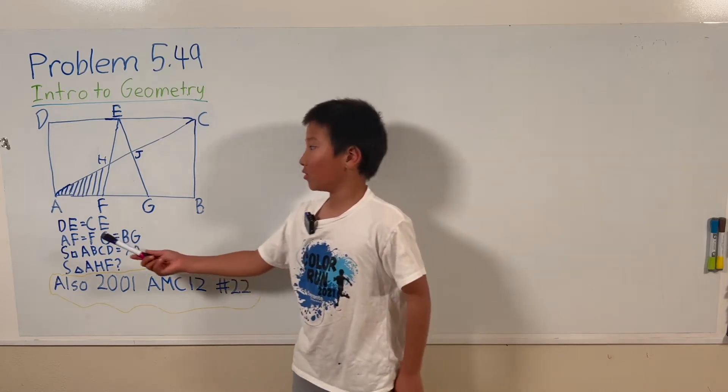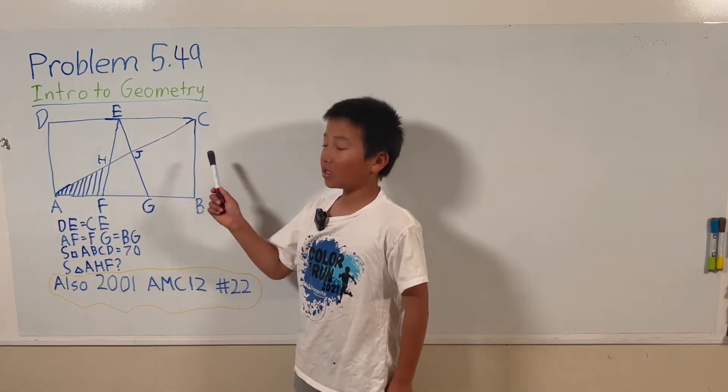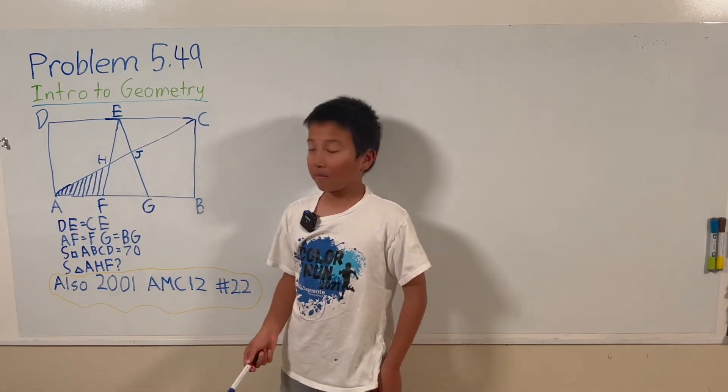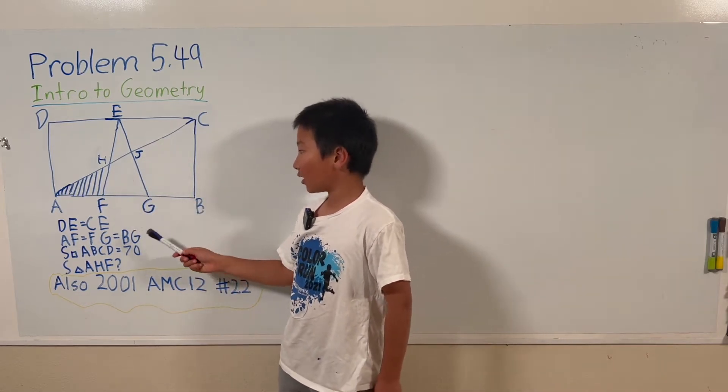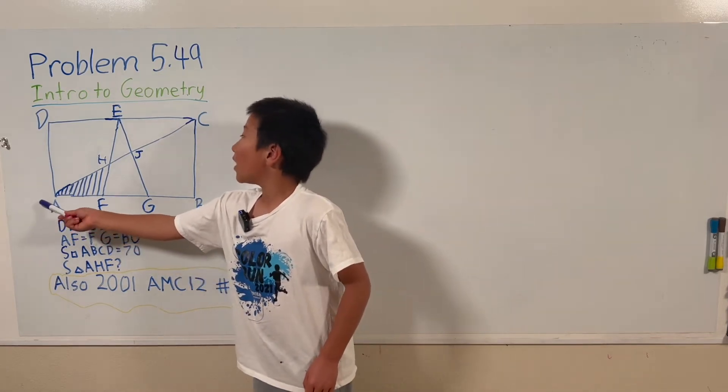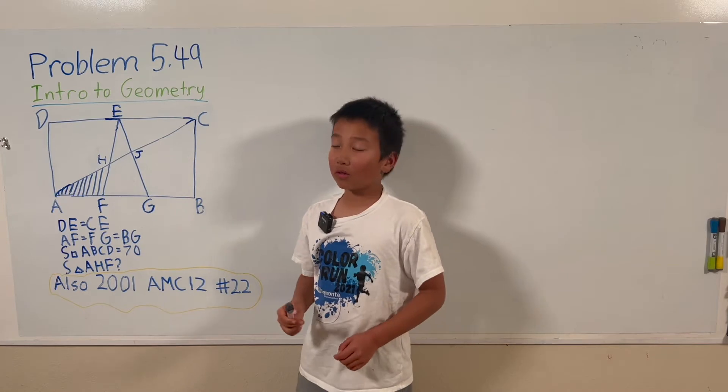In this problem, there's a rectangle ABCD, and E is the midpoint of CD. F and G trisect AB, and AC is the diagonal in here.